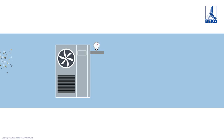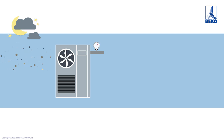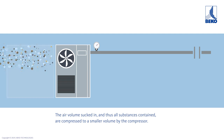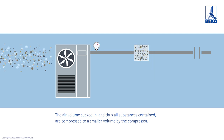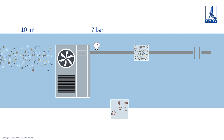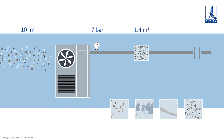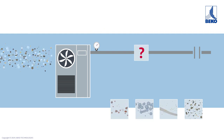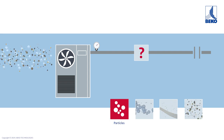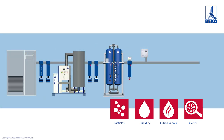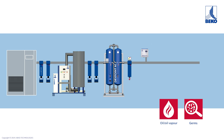It should also be noted that ambient conditions such as day and night can change considerably. The air volume sucked in — and thus all substances contained — are compressed to a smaller volume by the compressor. For example, with a compression of 10 cubic meters of ambient air at a system pressure of 7 bar, after compression all components are contained in approximately 1.4 cubic meters of compressed air. It must therefore be expected that after the compressor, a mixture of particles, humidity, oil vapor, and germs is contained in the compressed air.